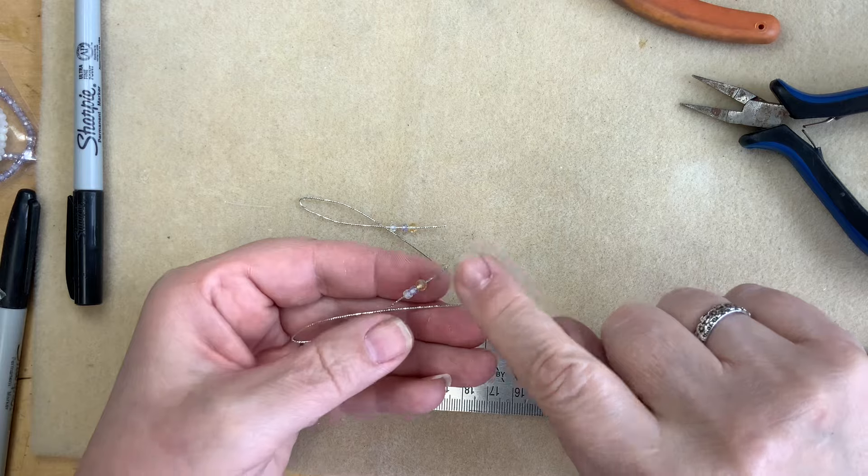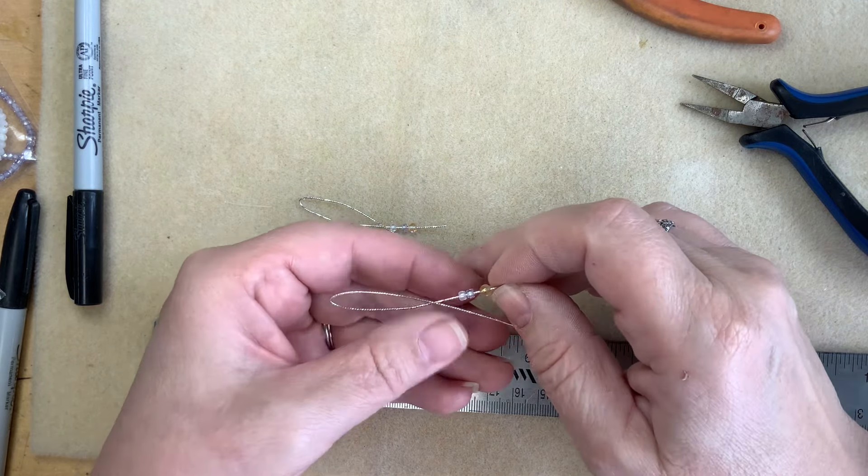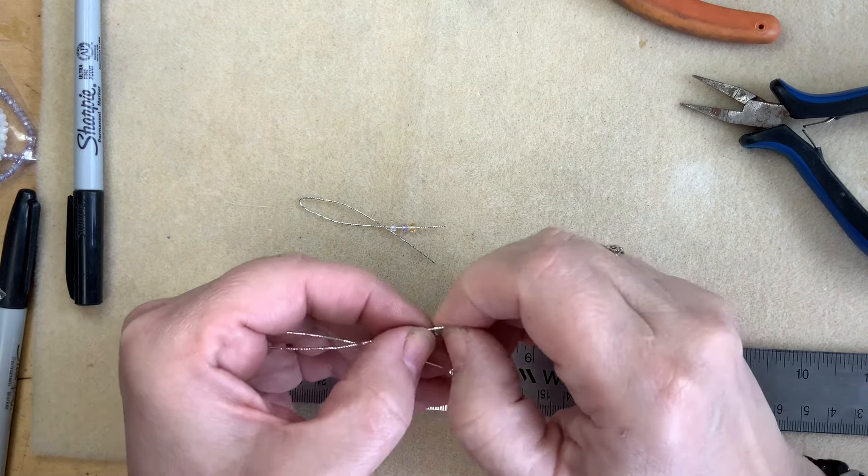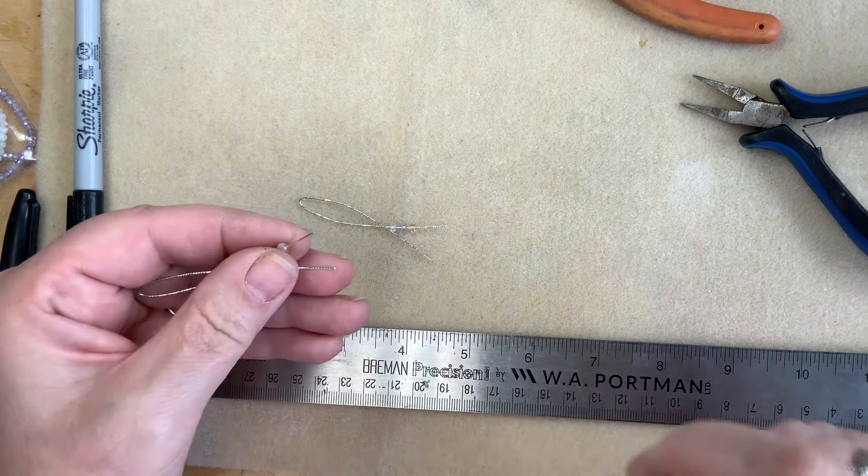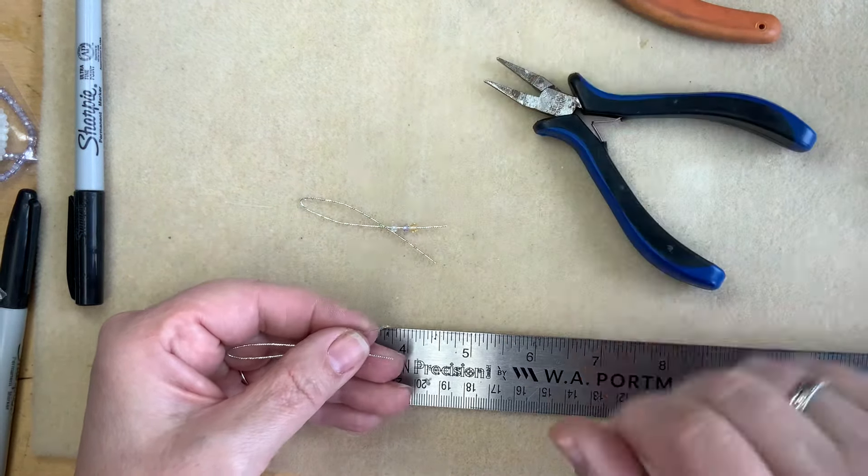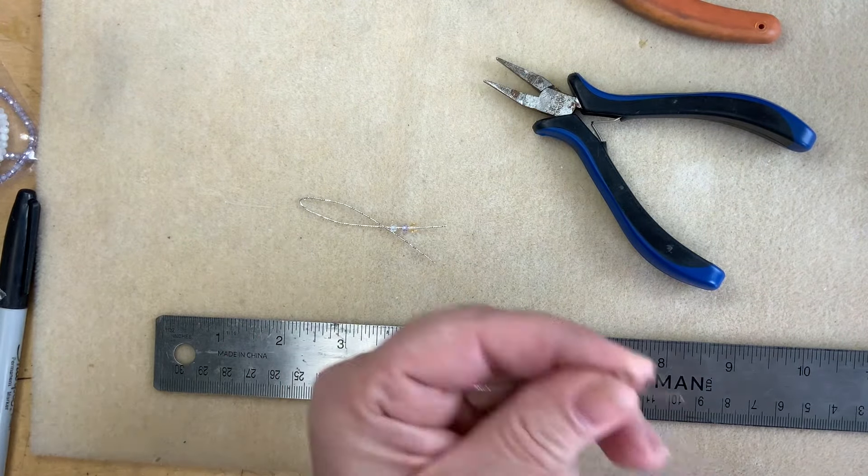Now to keep these on, we're going to paddle the end of this wire. Usually I do that with a chasing hammer. But these are so tiny, the area we want to spread. I'm not going to do it with a chasing hammer, but I'm going to actually flatten them with these flat nose pliers.